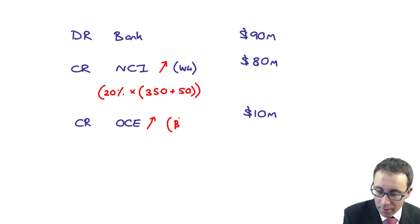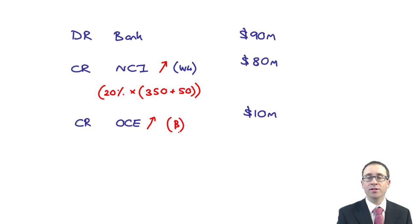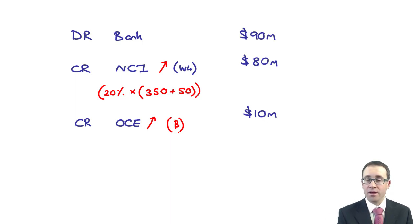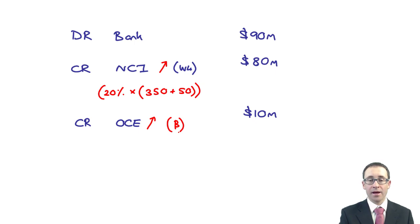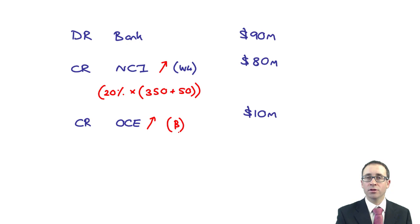Where does that credit of 10 come from? It is a balancing figure. There's nothing to stop it being a debit figure if the amount that we have received is less than the increase to the non-controlling interest. So here the increase of the NCI was 80. If we'd only received 50 in terms of cash, then the balancing figure will be a debit of 30 million. So that's going through there and looking at if you are disposing of shares, where you had control and you still have control.